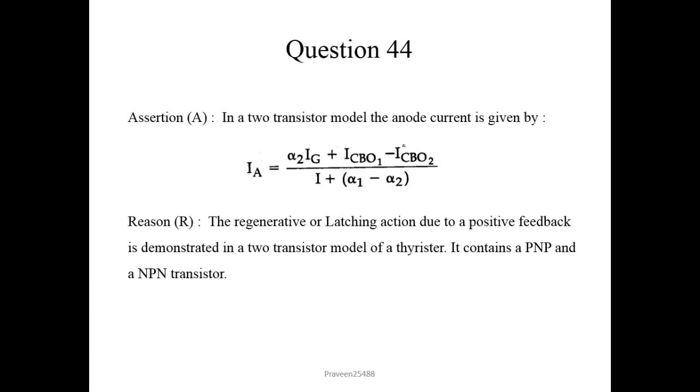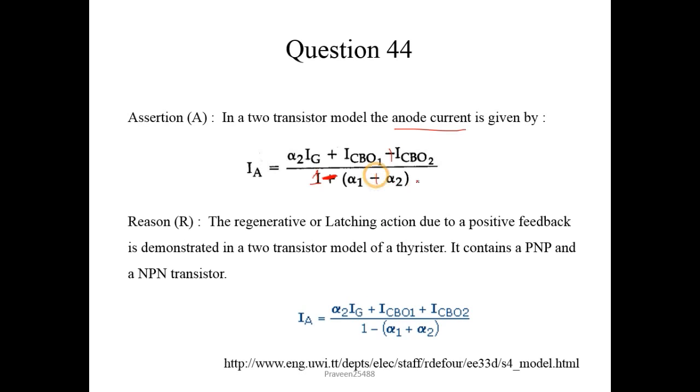Question number 44. In a two transistor model, the anode current is given by. So there is mistake in this expression. I will show you the expression and that you can find on the link given here on the two transistor model. And next reason. Regenerative or latching action due to positive feedback is demonstrated in a transistor model. It contains PNP and NPN transistor. So this reason is correct. Assertion is false. And reason is true. So here we will choose option 4.